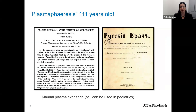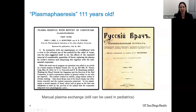When we think about plasmapheresis, you may not realize it, but it's actually something that was first described 111 years ago. There were two simultaneous papers that came out in 1914 — one at Johns Hopkins, by Abel and Roundtree, and then at the same year a paper out of Russia describing the same thing.